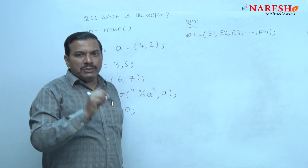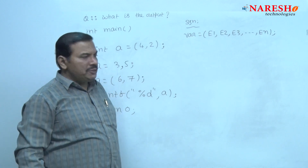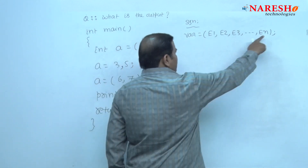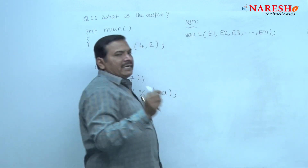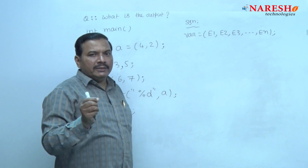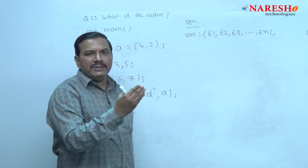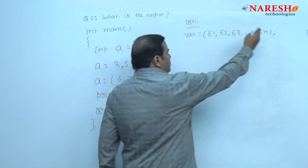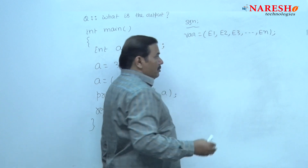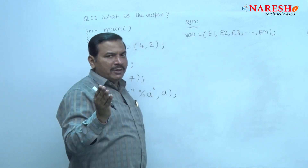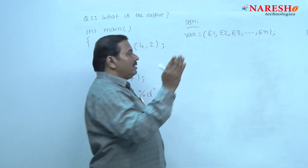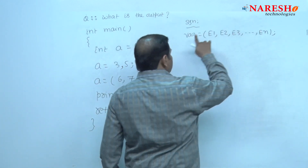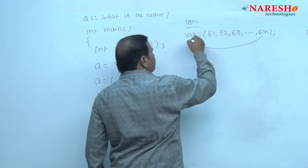The execution process: all these expressions separated with comma are evaluated left to right. The rightmost expression value is the final result, and this value is assigned to the variable.